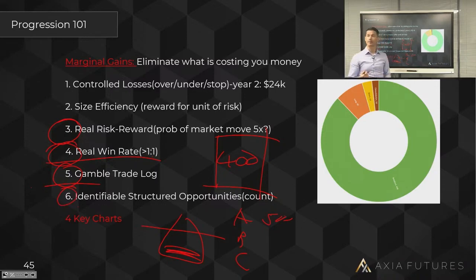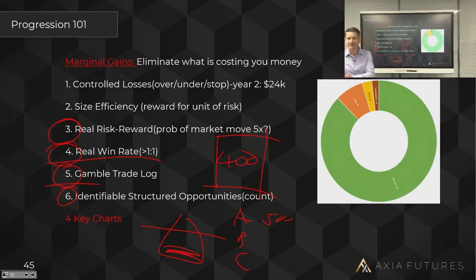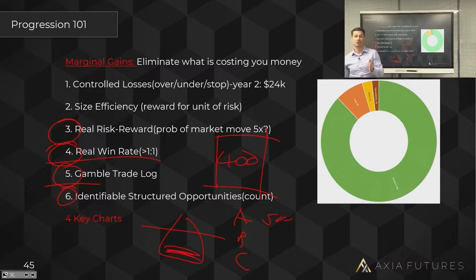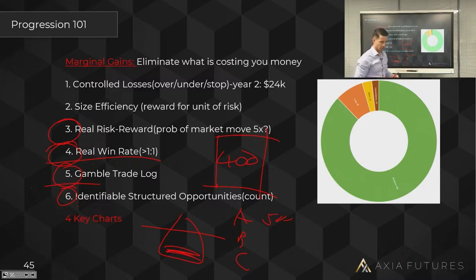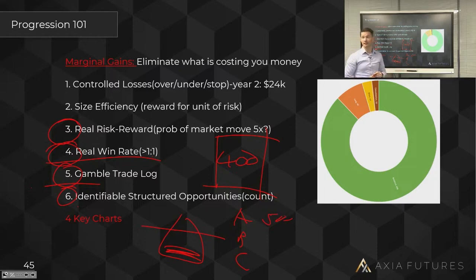Lastly: identifiable structured opportunities. This was actually a coping mechanism for me when I was struggling. At the end of every day I'd ask myself: how many identifiable pattern plays were there today? I'd log it — maybe one or two — then ask how many structured plays presented themselves: a breakout in play, a structured trade where I know my risk. When I was having a bad time, this would reassure me: 'it was just poor performance, you'll come in tomorrow and there'll be opportunities again.' It helped me debrief and stay ready to trade.